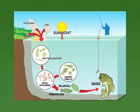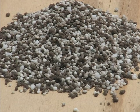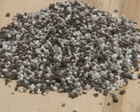Nutrients increase the amount of food available to the fish, which results in greater fish production. They are needed to promote plankton, which are microscopic plants and animals that determine the color of the water in your pond. Plankton form the base of the food chain in bass and bream ponds. They are consumed by small microscopic insects, which are then eaten by the fish.